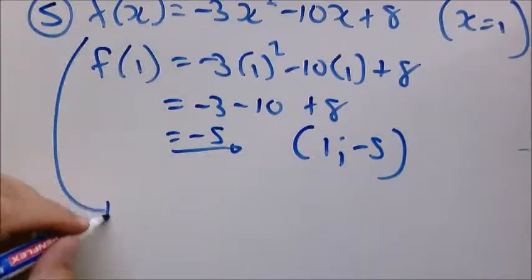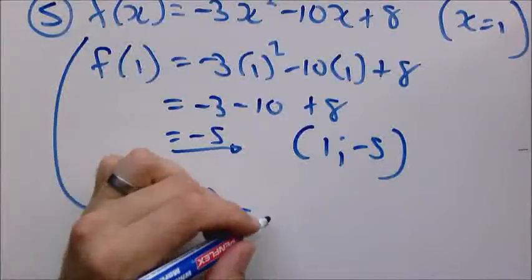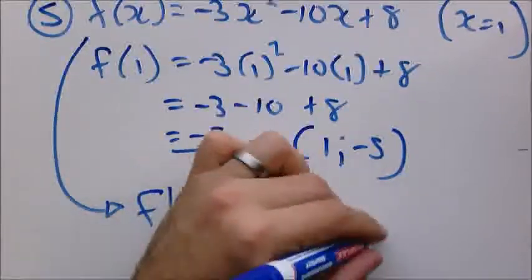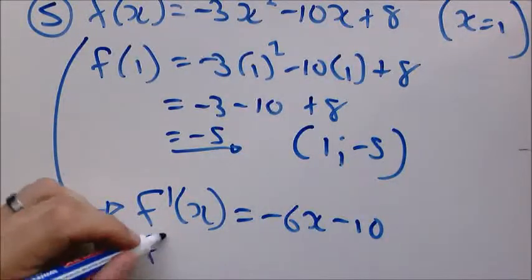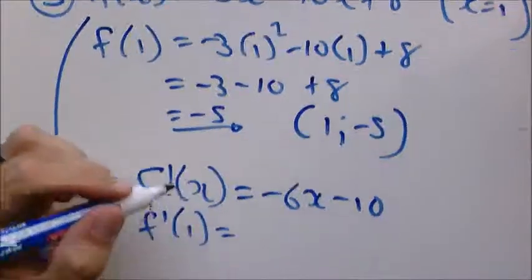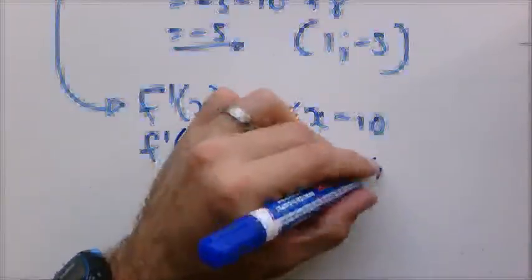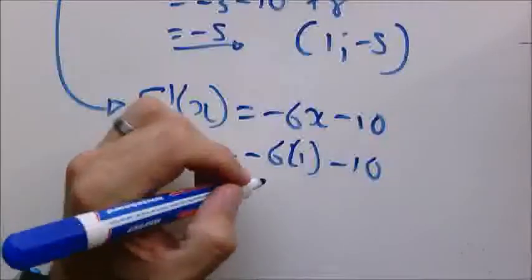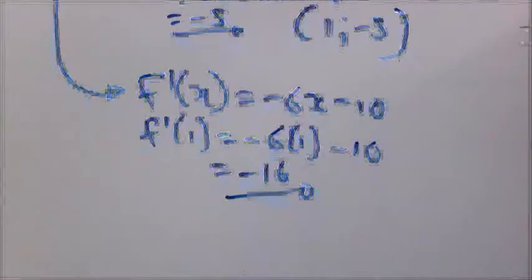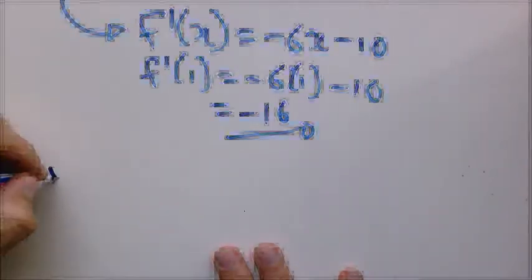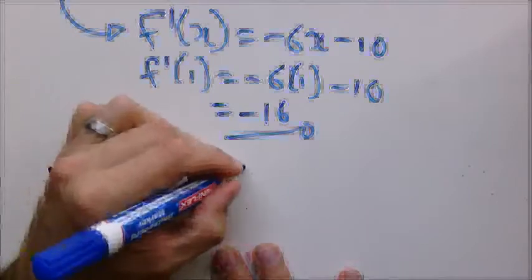The next step is to work with our derivative. So it becomes negative 6X minus 10. And we want the gradient at that point. So we substitute 1 into our derivative. So our gradient is negative 16. Now we are empowered to complete this question.